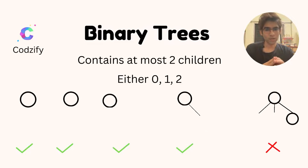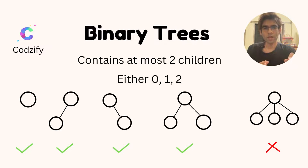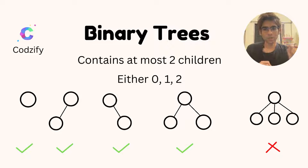Another example contains 3 children, so this is not a binary tree — this is a ternary tree. At most 2 children satisfies the condition of a binary tree.